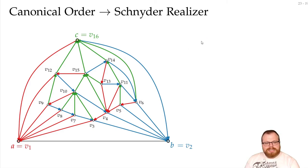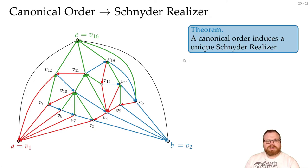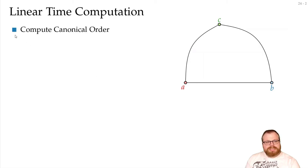So every Schnyder realizer induces a bunch of canonical orders, and a canonical order also induces a unique Schnyder realizer that we can compute for it. There was one hole so far—we didn't prove how to do the linear running time for the contraction algorithm. But actually we don't even need this. With this part here, we can just start with the canonical order and from this canonical order compute the Schnyder realizer.